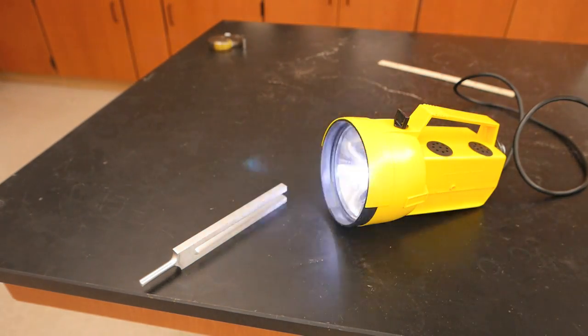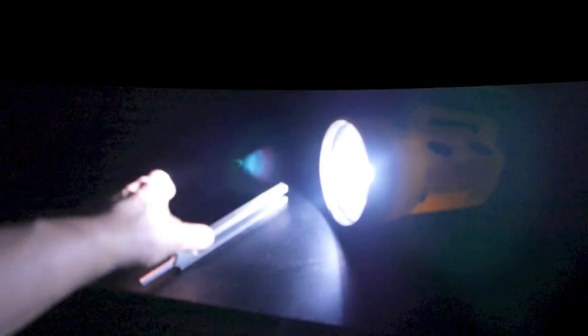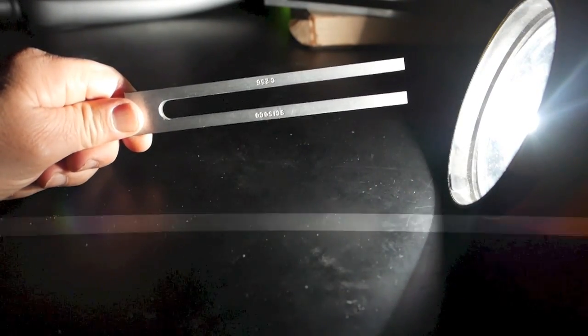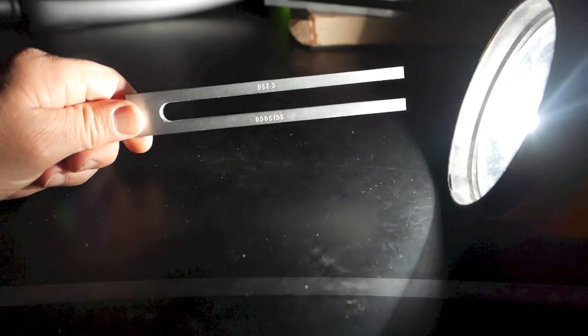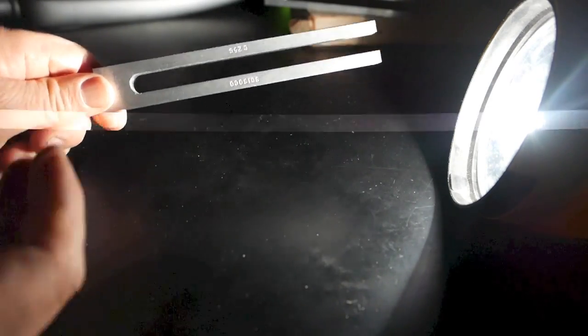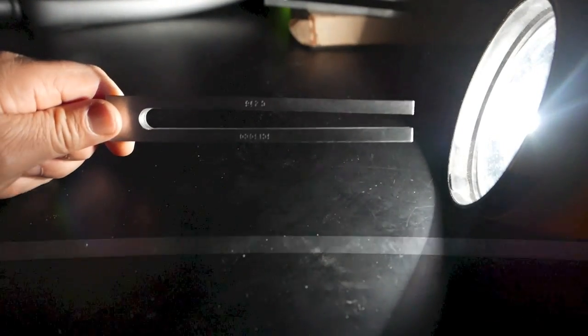My students wanted to see the movement of the tine, so I borrowed a strobe light so that we could slow down the movement of them. This is a middle C, it vibrates at 256 times per second, and so I'll adjust the strobe light so that it's slightly higher or lower than that frequency. We can see that the tines move in and out together.